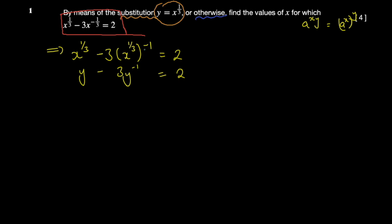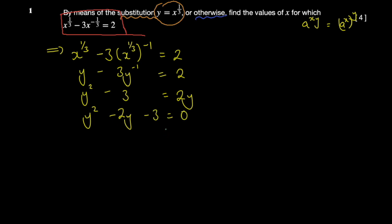To eliminate the negative power and form a quadratic equation, I multiply every term by y. This gives y^2 minus 3 equals 2y. Rearranging by moving all terms to one side, I get the quadratic: y^2 minus 2y minus 3 equals 0.